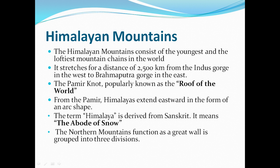The Himalayan mountains consist of the youngest and loftiest mountain chain in the world. It stretches a distance of 2,500 km from the Indus in the west to the Brahmaputra in the east. The Indus River marks the western stretch of this 2,500 km range.